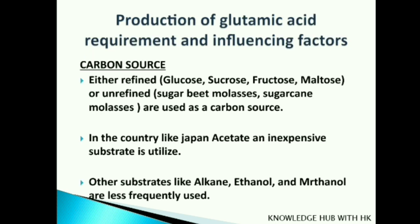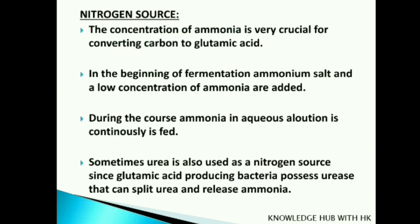The influencing factors and requirements for glutamic acid production begin with the carbon source. Refined carbon sources such as glucose, sucrose, fructose, or maltose, or unrefined sources such as glucose, sugar beet molasses, and sugar cane molasses are used. In countries like Japan, acetate as an inexpensive substrate is utilized. Other substrates like alkanes, ethanol, and methanol are also used, but less frequently.